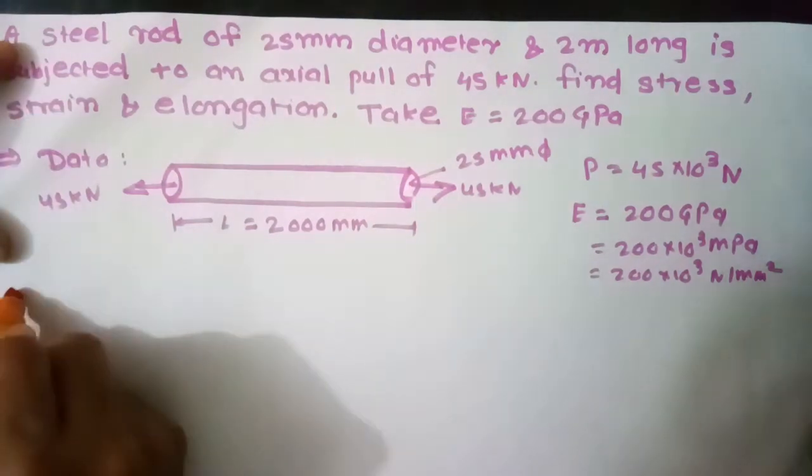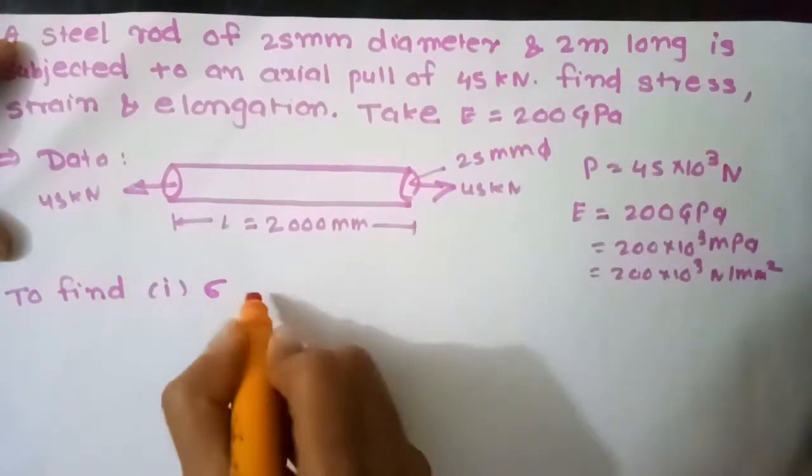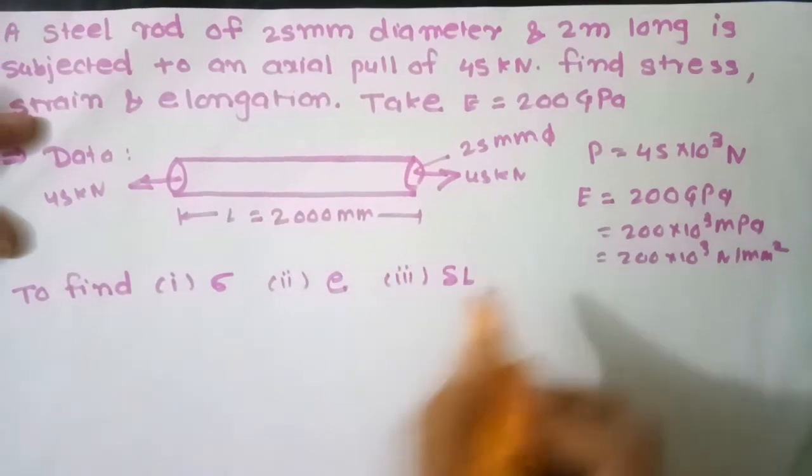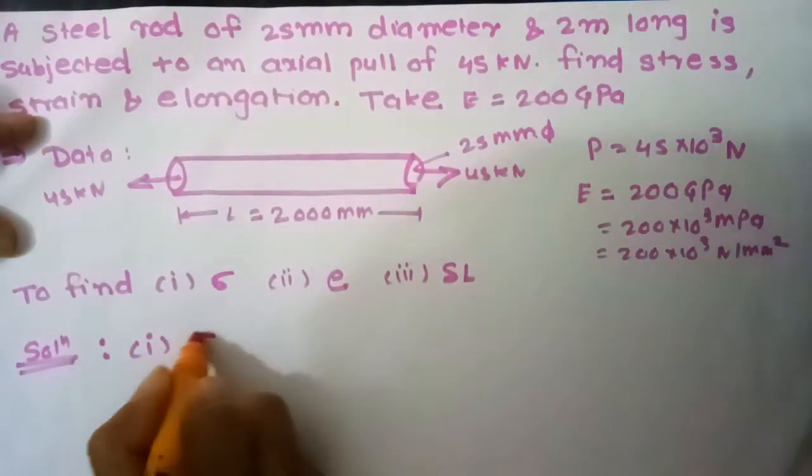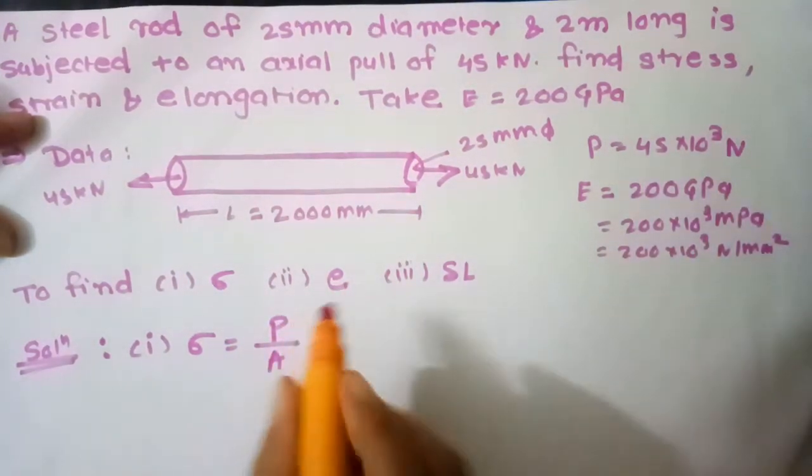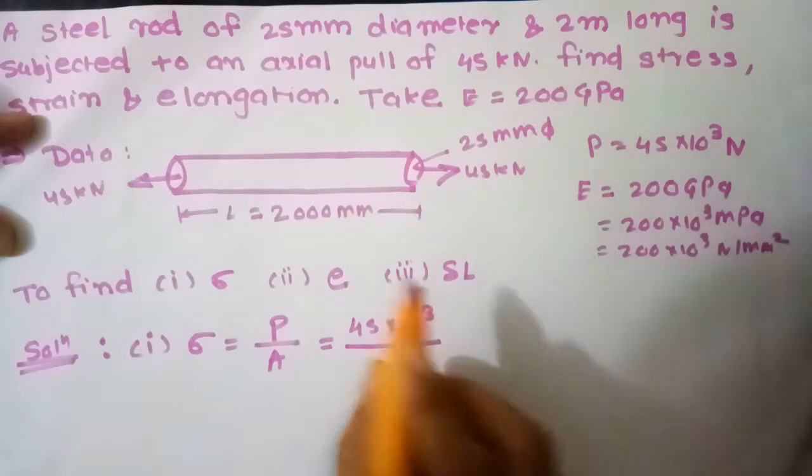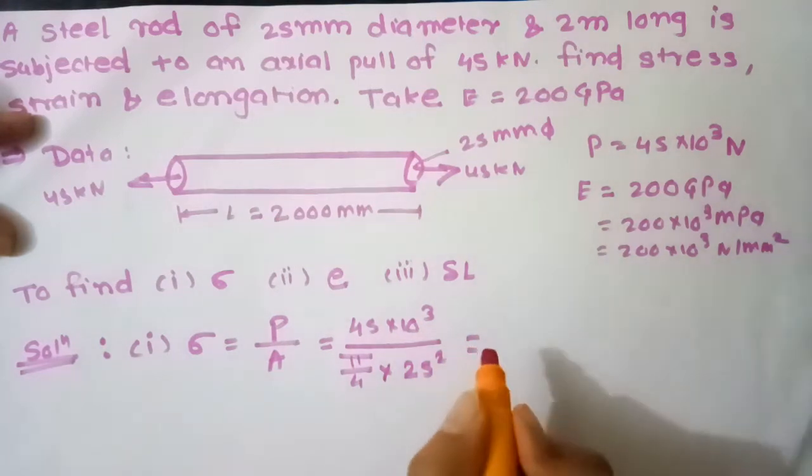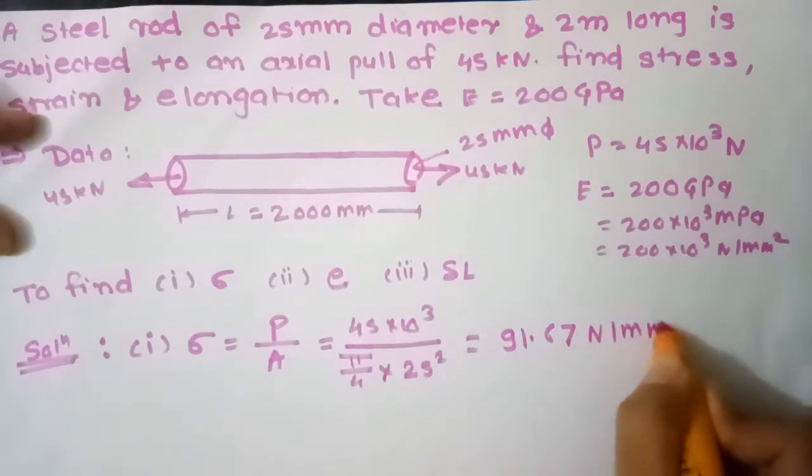To find stress. First, stress. Stress is force upon area. P is 45 into 10 raised to 3 N. Area for circular section is π by 4 into D square. D is 25. Therefore, stress is equal to 91.67 N per mm square.